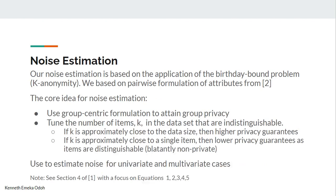We base our formulation on the birthday bound problem. In a group of 23 individuals, you have a 50% chance that two of them share the same birthday. So what if we had a way of tuning a formulation where we can specify how many people we want to look similar within a group? If items are similar, they're indistinguishable from each other. If as many data points as possible are closer to the data size, you have higher privacy because all items look the same, making it hard to distinguish one from another.